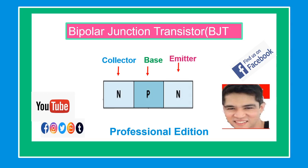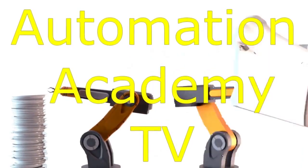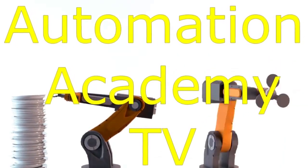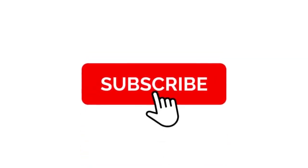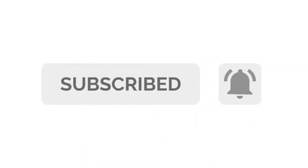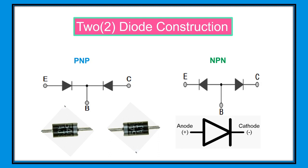Our topic for today is Bipolar Junction Transistor or BJT. In our previous discussion, diodes are made up from two pieces of semiconductor material, either germanium or silicon, to form a P-N junction. The joining of two diodes produces a 3-layer, 2-junction, 3-terminal device to form a Bipolar Junction Transistor or BJT.